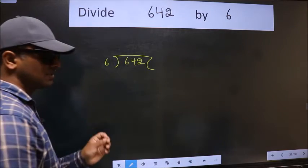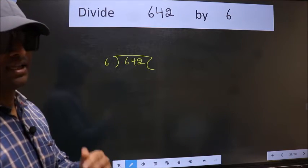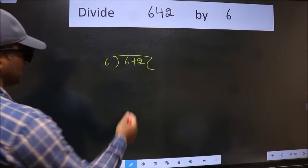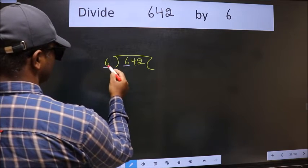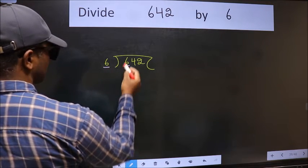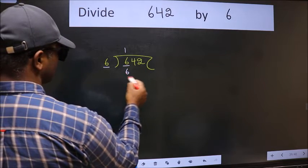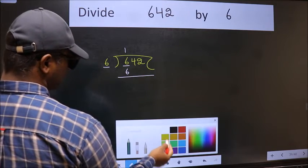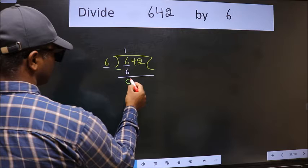This is your step 1. Next, here we have 6 and 6 here. When do we get 6 in the 6 table? 6 ones, 6. Now we should subtract. We get 0.